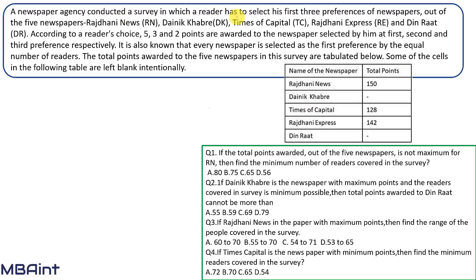A newspaper agency conducted a survey in which a reader has to select his first three preferences out of five newspapers: Rajdhani News (RN), Dhani Khabri (DK), Times Capital (TC), Rajdhani Express (RE), and Dinrath (DN). Five, three, and two points are awarded to newspapers selected at first, second, and third preference respectively. It is also known that every newspaper is selected as the first preference by an equal number of readers.